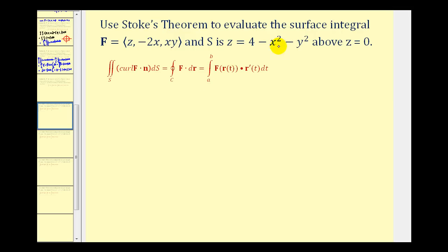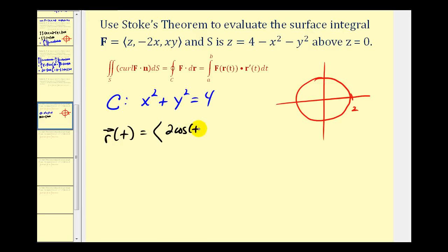Well, our curve will be the XY trace of our surface. So if we set Z equal to zero, we would have X squared plus Y squared equals four. So we have a circle of radius two. So R of T is going to be equal to two cosine T, two sine T, zero.